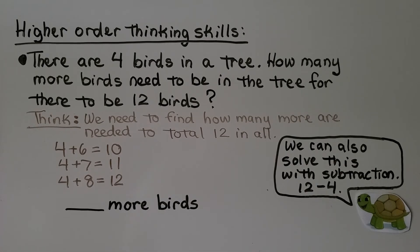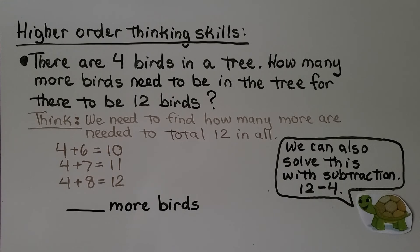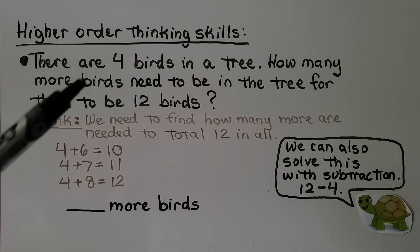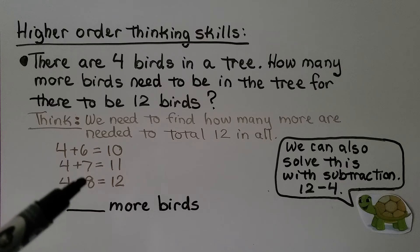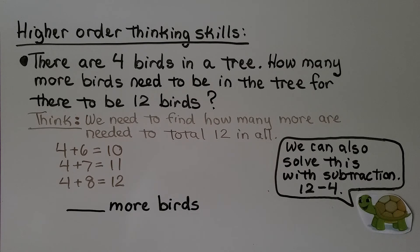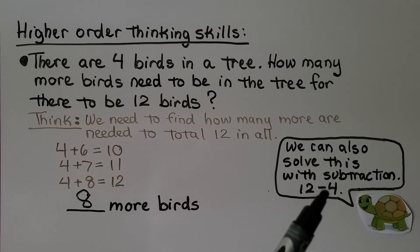Now let's try some higher order thinking skills. There are 4 birds in a tree. How many more birds need to be in the tree for there to be 12 birds? We need to find how many more birds are needed to total 12. There are 4, but we need 12. We can think: 4 plus 6 equals 10, 4 plus 7 equals 11, and 4 plus 8 equals 12. That means there would need to be 8 more birds. We can also solve this with subtraction: 12 minus 4 leaves 8 birds. We need 8 more birds for there to be 12 in the tree.